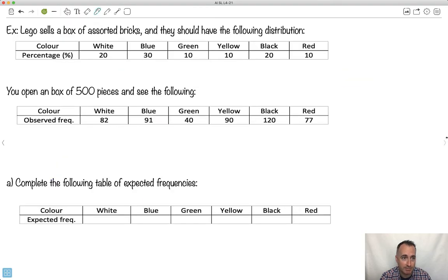Let's do an example. I've got Lego, and they sell a box of assorted bricks, and they should have the following distribution. Lego tells you there should be 20% white ones, 30% blue, 10% green, 10% yellow, 20% black, and 10% red. That's what they tell you it should be. Now you open a box of 500 pieces, and you actually see these observed frequencies: 82, 91, 40, 90, 120, 77. They should add up to 500.